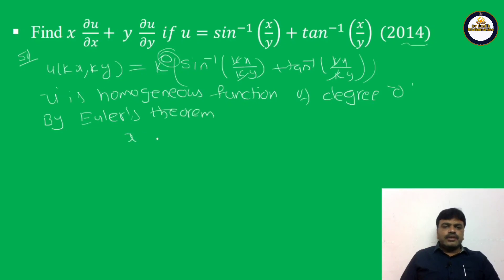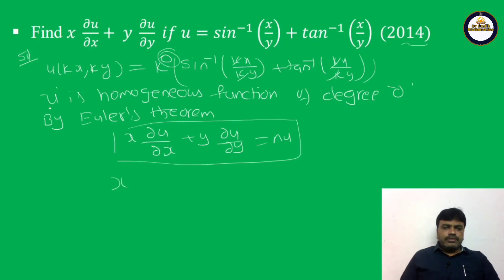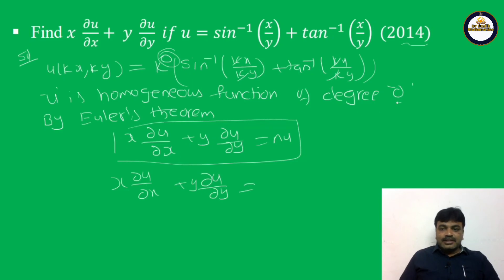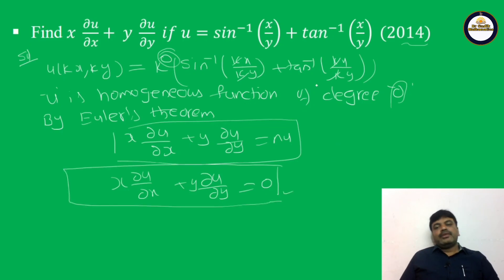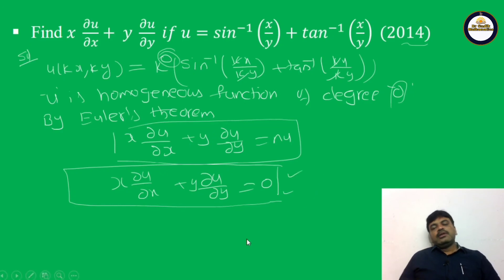What is Euler's theorem? x·∂u/∂x + y·∂u/∂y = n·u. Here n = 0, so the value is 0. This is a simple result. Whenever we observe such type of functions where k cancels completely, we can write it as k⁰, meaning u is a homogeneous function of degree 0, and by Euler's theorem the answer is 0.